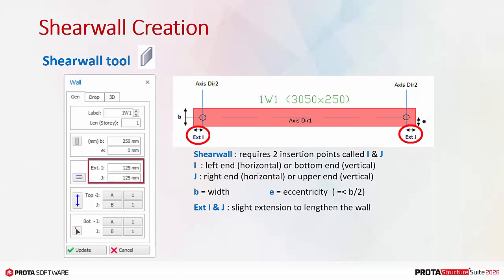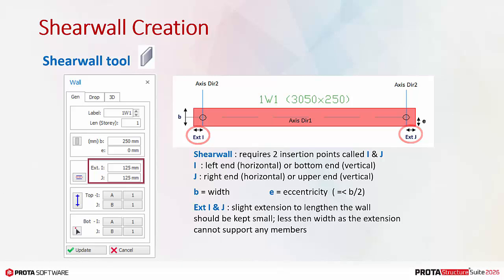Extension I and J is used to lengthen the wall slightly beyond the insertion point. However, this extension is meant to be small and preferably less than the width of the wall. The reason is that the extended part of the wall will not be able to support any members, such as beams or slabs.